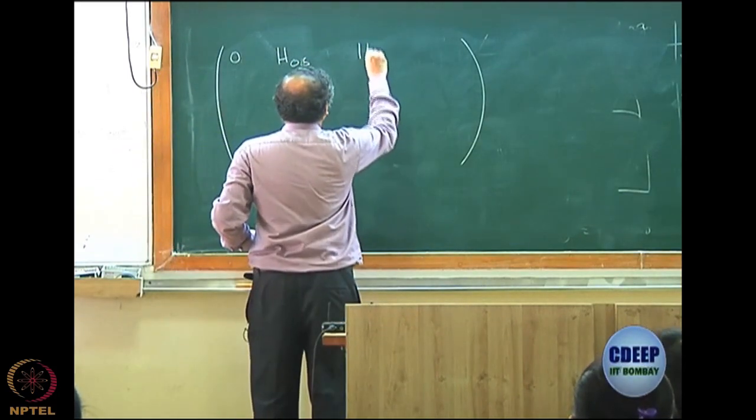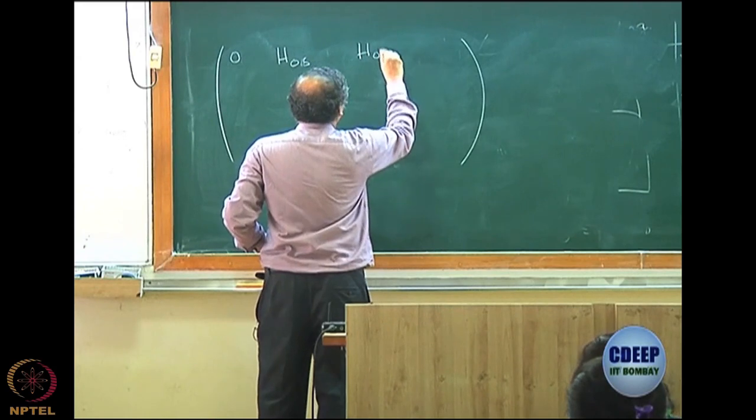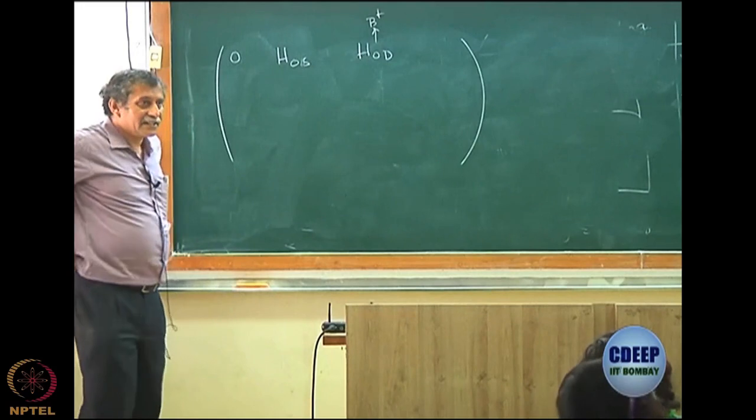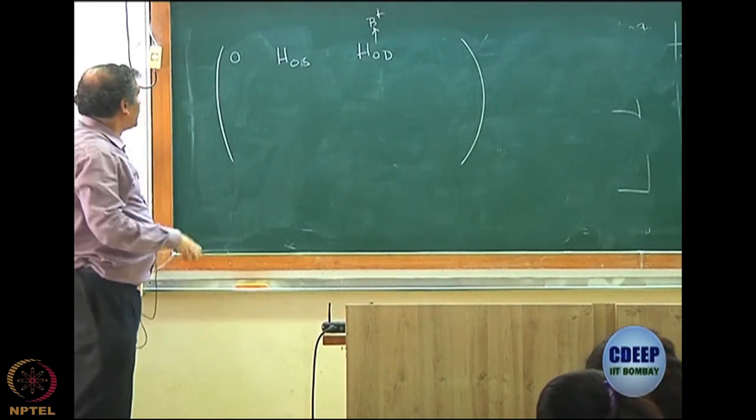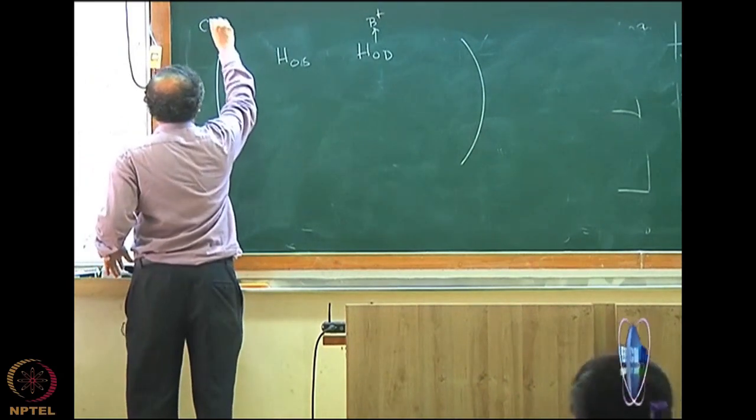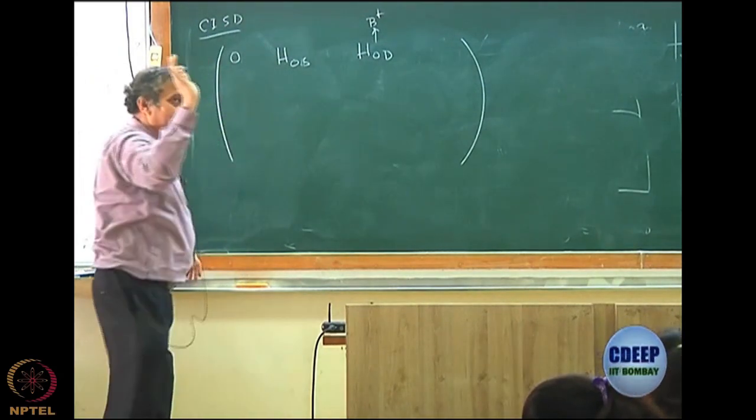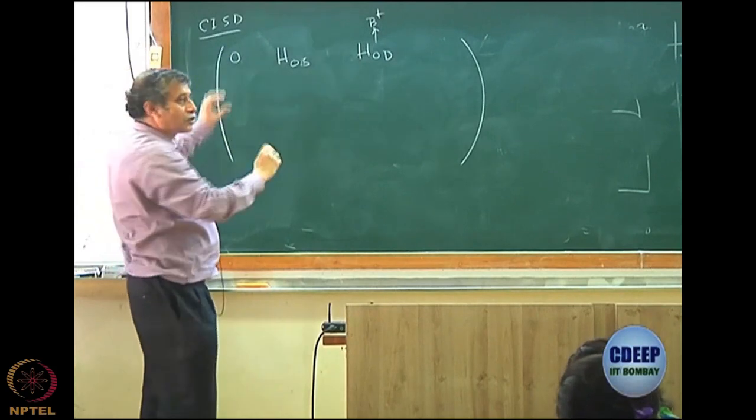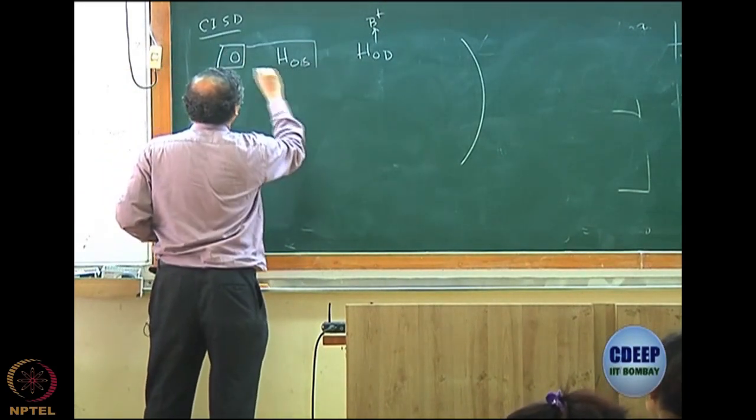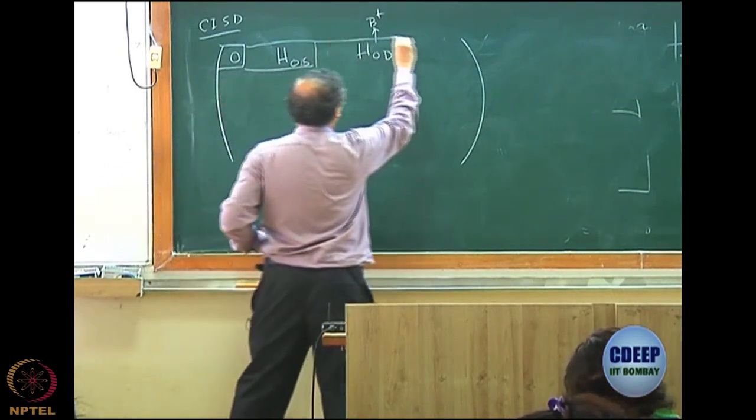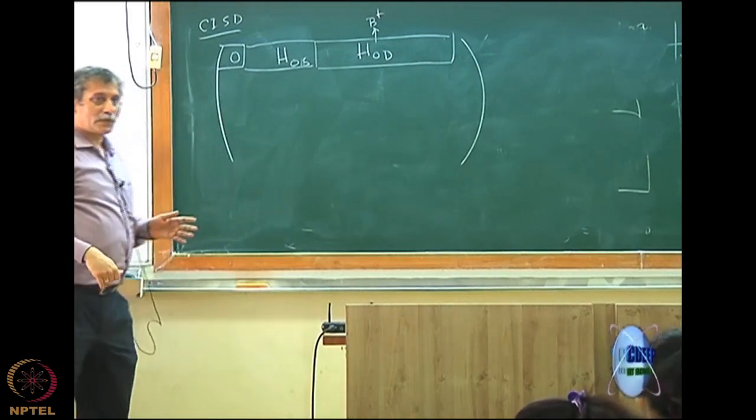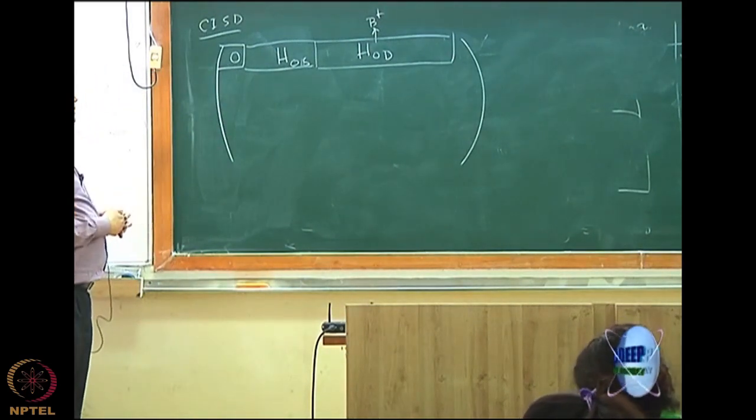Then I have H0D, which was essentially what I called B dagger in the previous exercise. So H0D, it is a 3 block. So what I am now writing is a CISD equation. CISD has 3 blocks: Hartree-Fock which is only 1 by 1 block, then you have a block of singles Hartree-Fock, then you have a block of doubles. Of course this should be larger than this, quite clear number of doubles should be larger than the number of singles.